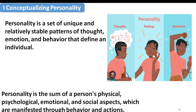Like any concept or chapter, we begin with a definition, which stands as the most fundamental approach to understand the concept. As the image suggests, personality broadly comprises three components: the thoughts, the feelings, and behaviors. Put together, personality can be defined as a set of unique and relatively stable patterns of thought, emotions, and behavior that define an individual.